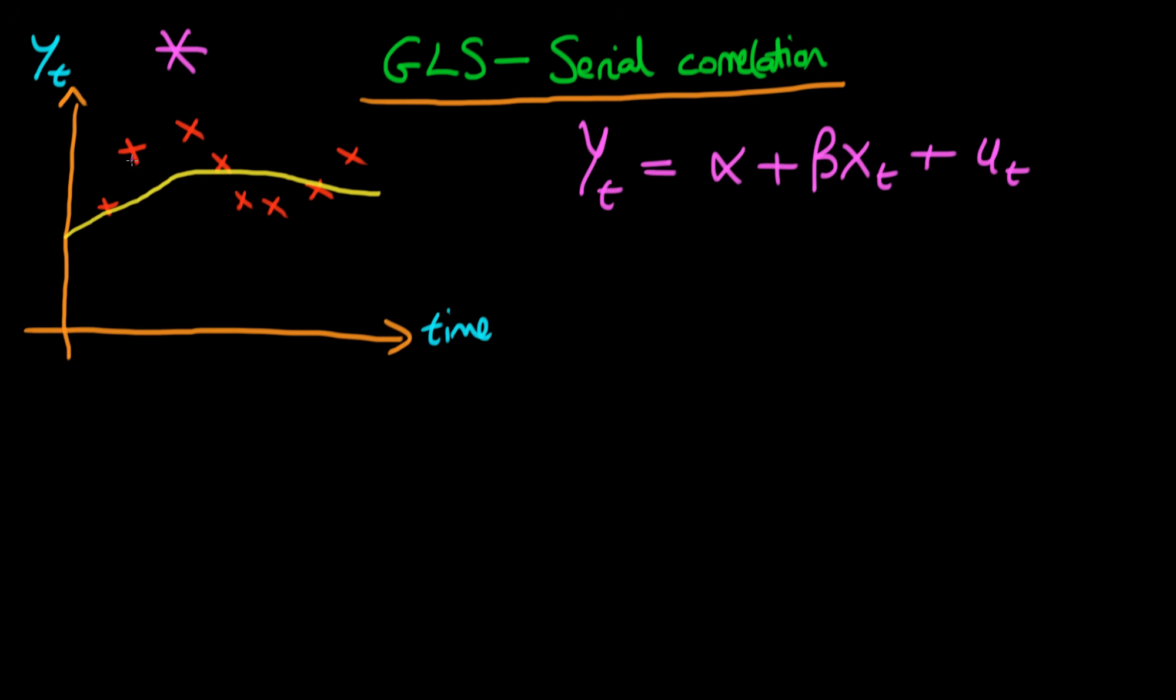You can see here that we've got a model given by the yellow line, and we've got runs of positive errors which you see here in these first two points, followed by a few runs of negative errors, and then it goes positive again. By the very fact that we've got these runs of positive and negative errors, that shows that we have serial correlation.